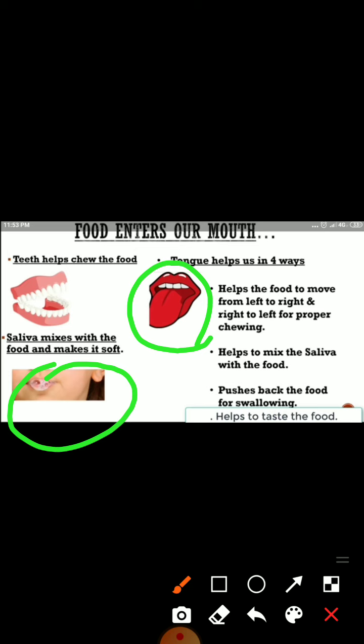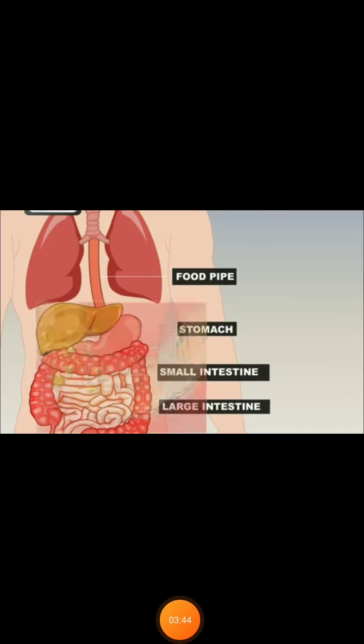The tongue helps digestion of food in the mouth in four ways. First, it helps the food to move from left to right and right to left for proper chewing. Second, it helps to mix saliva with the food. Third, it pushes the food into the food pipe so it reaches the stomach. Fourth, it helps to taste the food — the taste buds are present on the tongue and they help us taste the food.